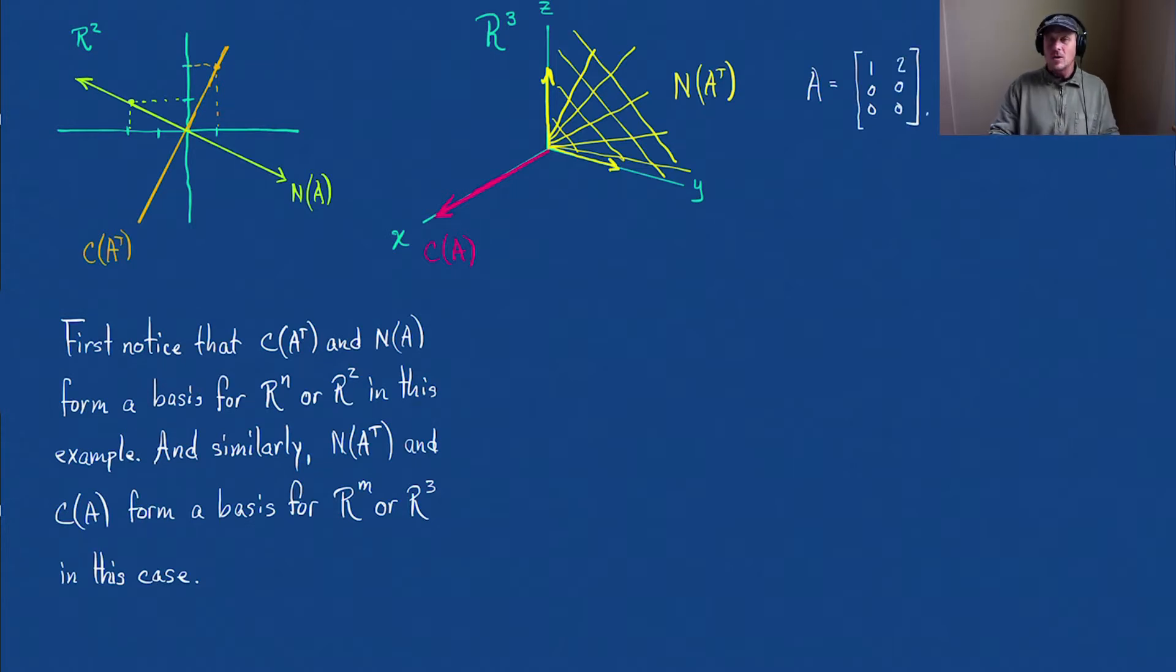Okay, so notice that first the column space of A transpose and the null space of A form a basis for R^n, or R^2 in this example. And similarly, the left null space and the column space of A form a basis for R^m, or R^3 in this case.